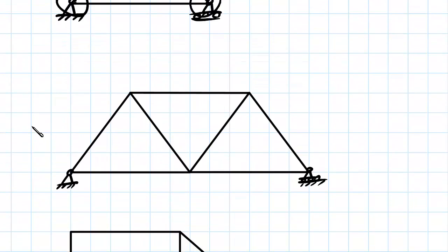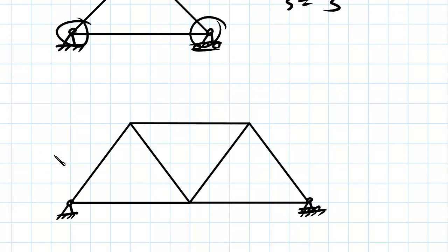The next one we've got is a little bit more complicated. We've started off with a triangle element, so this is our triangle element, and we've added two members out of the joint.